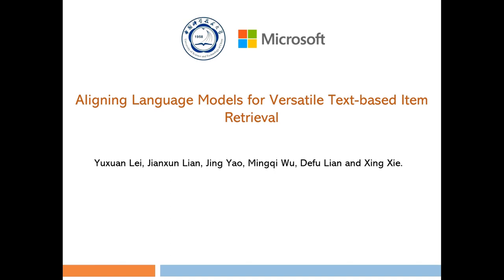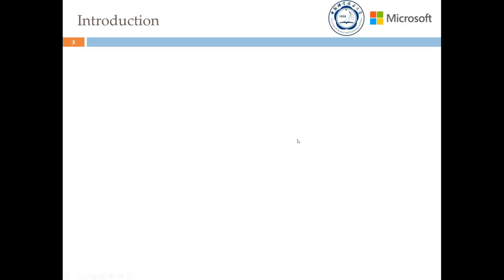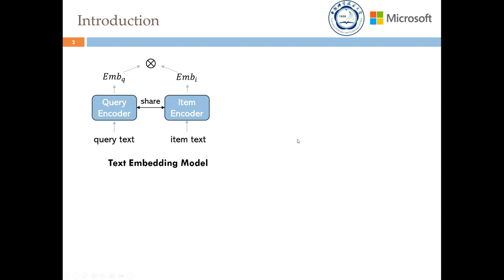Hello, this is the promo video for our work titled Aligning Language Models for Versatile Text-Based Item Retrieval. Item retrieval is a crucial component of recommender systems and search engines. The embedding-based matching paradigm, coupled with the two-tower model architecture, has emerged as the predominant approach for item retrieval.